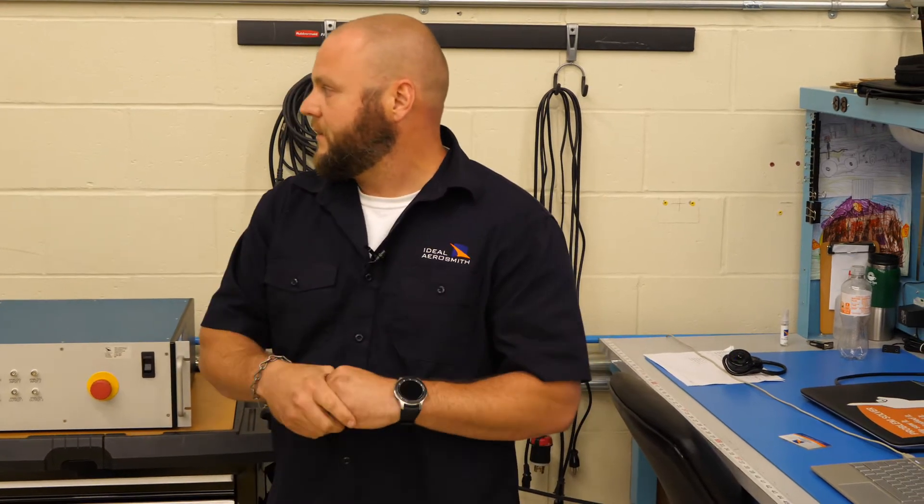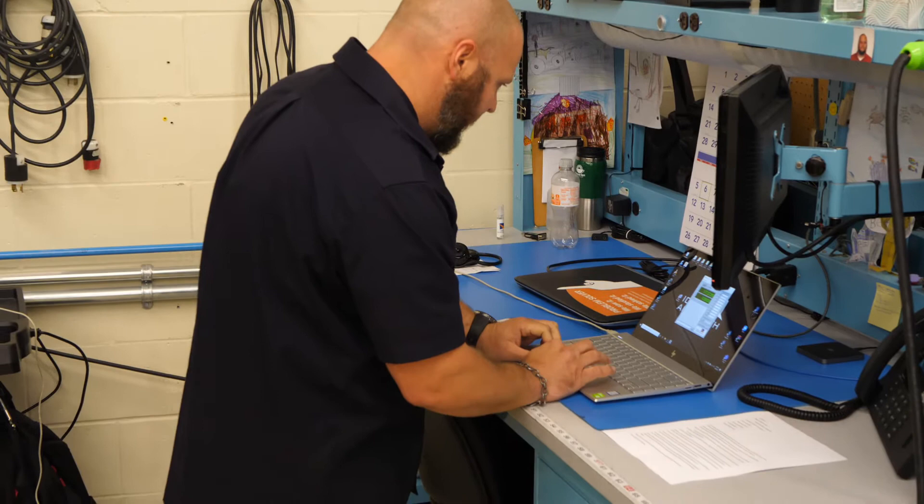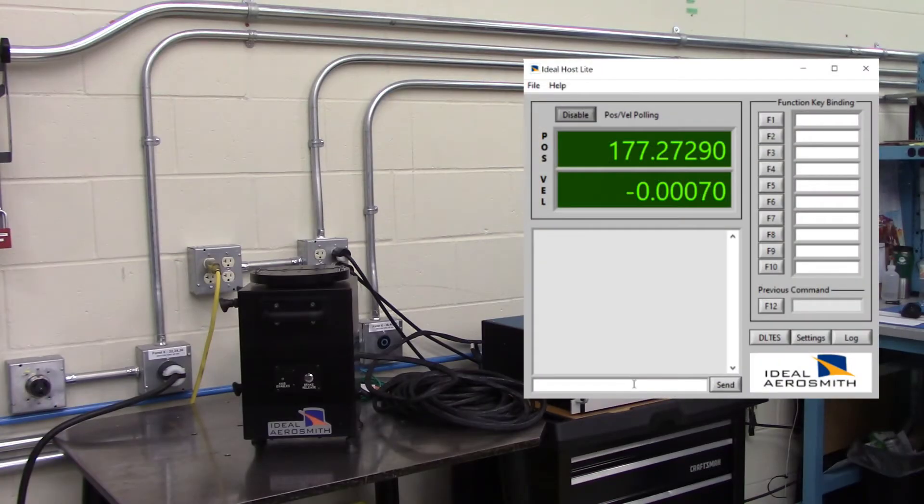Our next step will be to command a motion to get our rate table spinning. The first thing we will do is enter BRK0. All of these commands that I use will be available in your ATL manual. BRK0 is the command to release the brake. When we hit enter, we hear the brake release on the table.